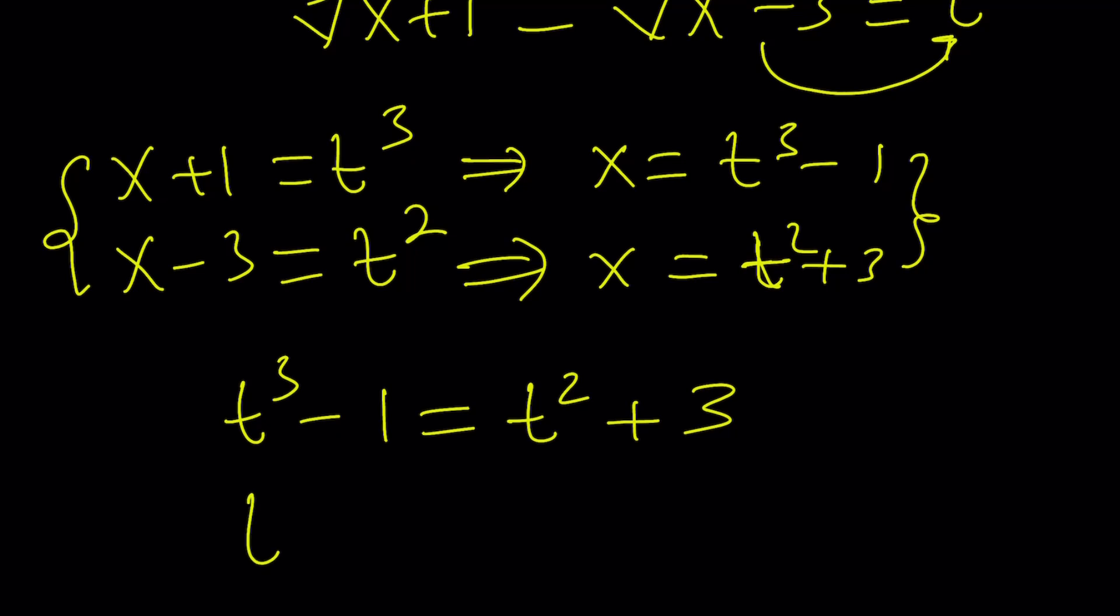Let's put everything on the same side. t cubed minus t squared minus 4 equals 0. Now, what is t? Let's find out.